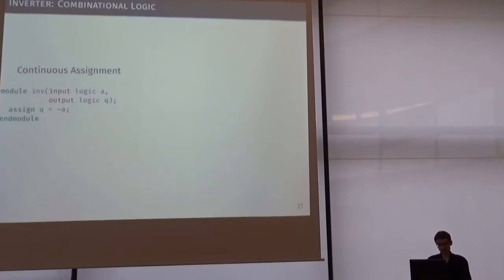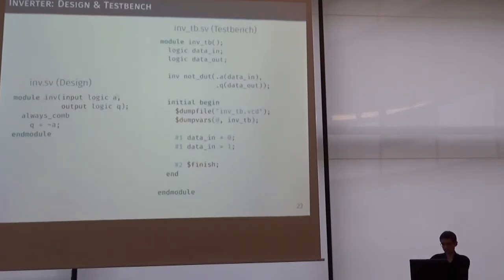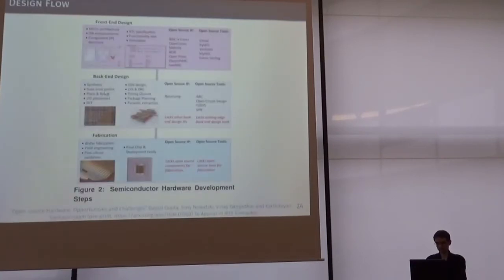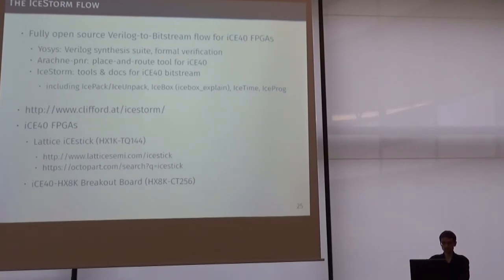We can start with a simple inverter design. An inverter is an implementation of a NOT gate — it takes one-bit input and produces one-bit output by negating the input. This is called continuous assignment because it happens continuously when you turn it on and connect it to given hardware. You can also implement this as a procedural using the always_comb block, which is often preferred. From this simple design, we can demonstrate a test bench. When we run this, we go through the entire flow, and what is interesting is that we now have a fully open source flow from Verilog to bitstream for field-programmable gate arrays. Every single thing — whether it's Verilog synthesis, place and route, or configuring the bitstream — is fully documented and fully open source.